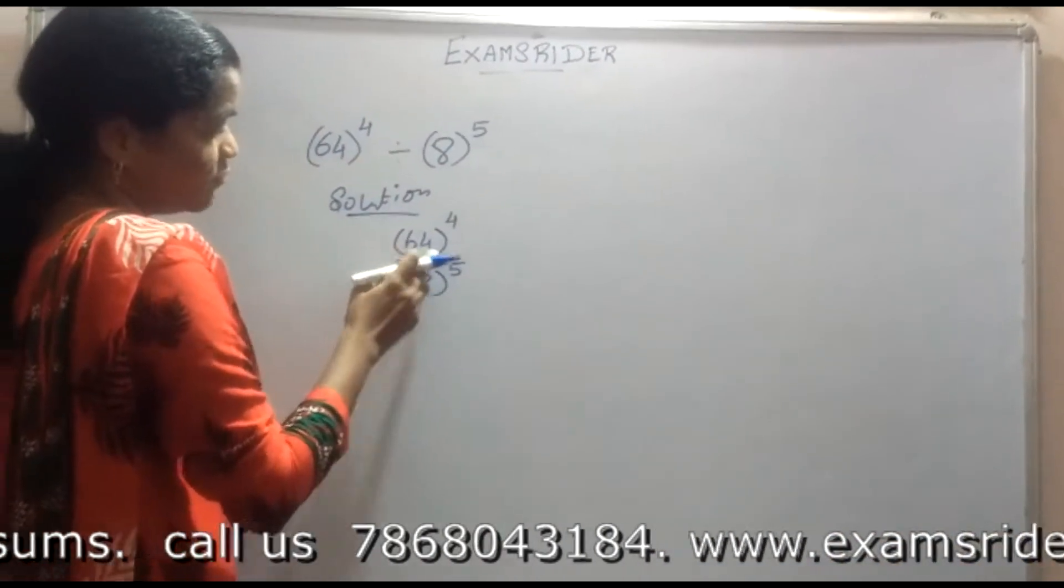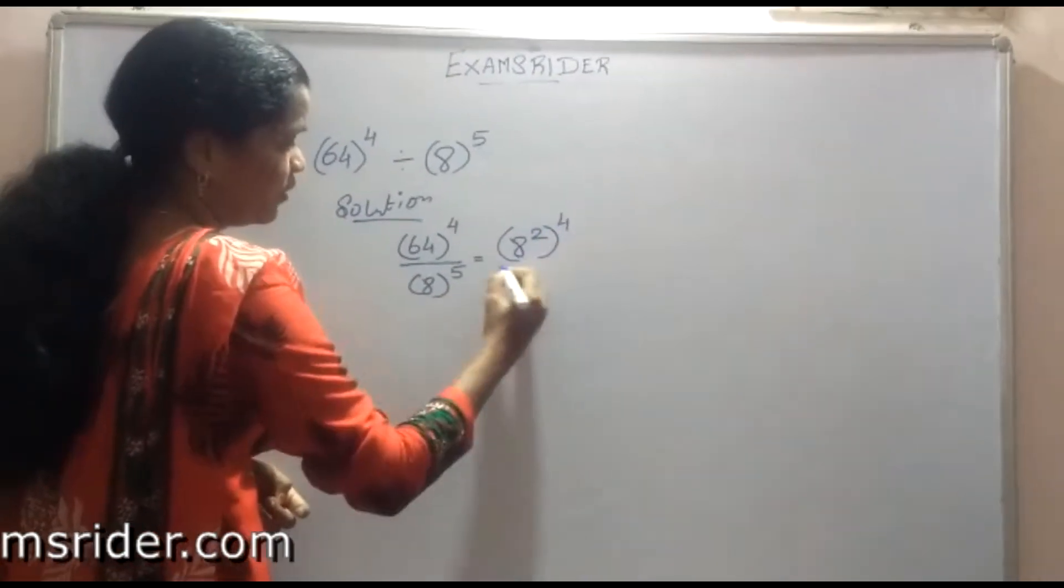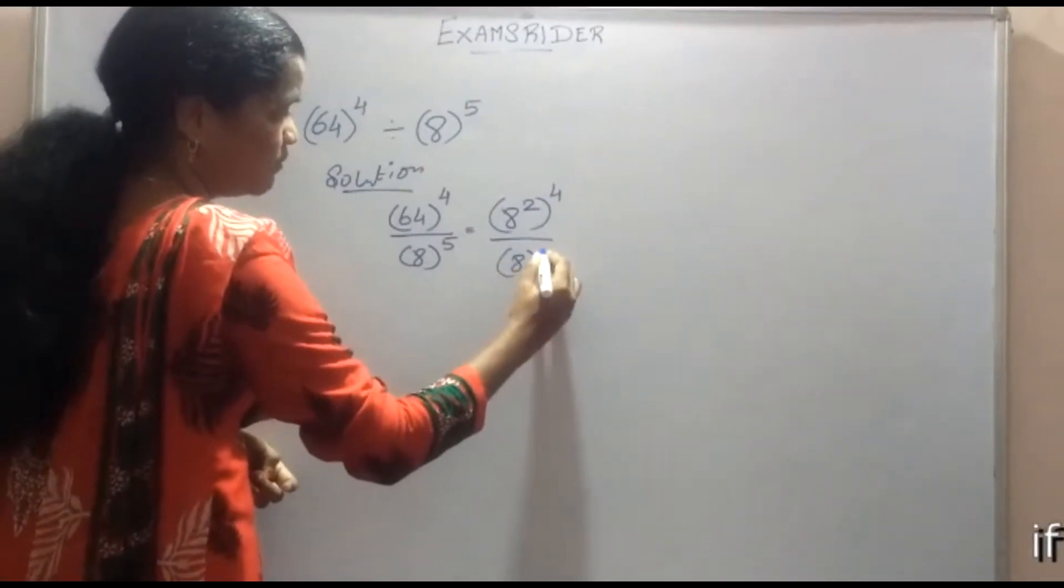First we simplify 64 into 8. That is 8 square, the whole power 4, divided by 8 power 5.